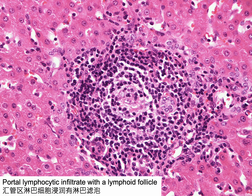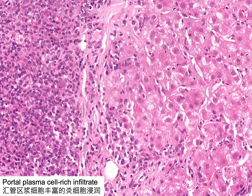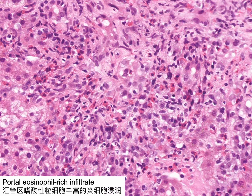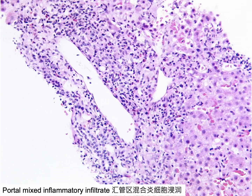Portal tracts may be expanded by lymphocyte-predominant inflammation with lymphoid follicle formation, or by moderate to marked infiltration of mainly small lymphocytes. Some portal tracts contain numerous plasma cells, a significant number of eosinophils, or many neutrophils. An interlobular bile duct infiltrated and distended by neutrophils indicates acute cholangitis. Portal inflammation can also consist of mixed inflammatory infiltrate including lymphocytes, plasma cells, and scattered eosinophils.